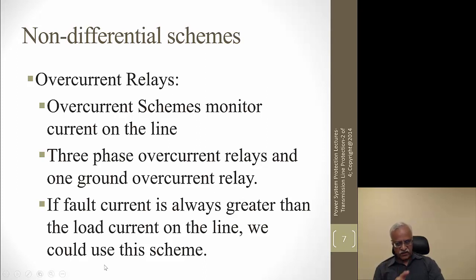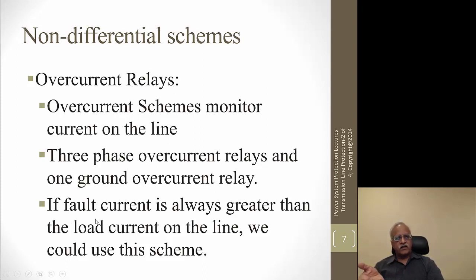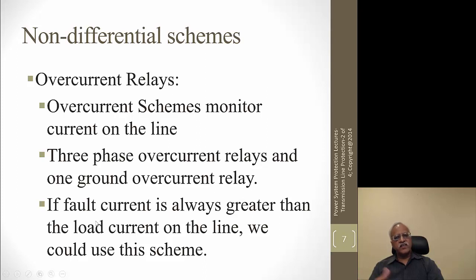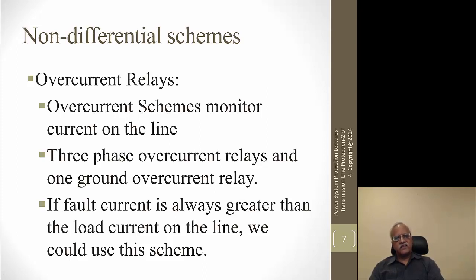In an interconnected network, directional overcurrent relays are used. Ground overcurrent relays are very useful because under normal conditions Ia + Ib + Ic equals zero, so there is no ground current. Under ground fault conditions that current appears, and we can set directionality looking towards the line. In radial feeder systems, non-directional overcurrent relays suffice, whereas in a transmission system with an interconnected network, directional relays are required.